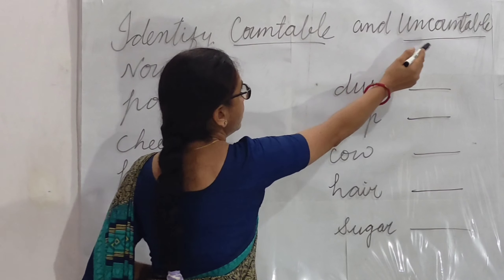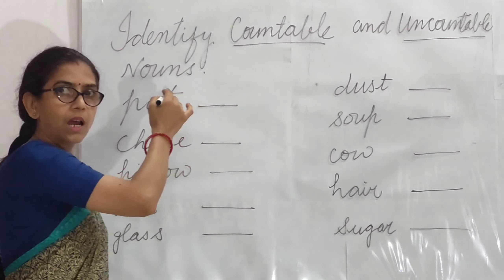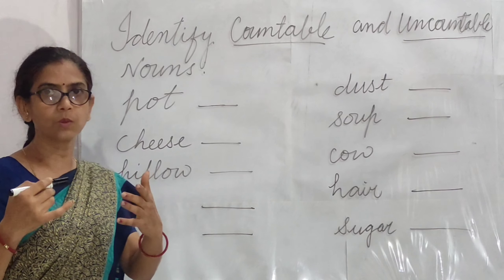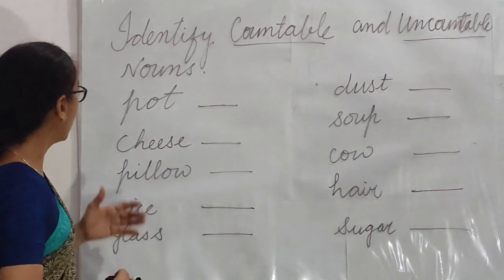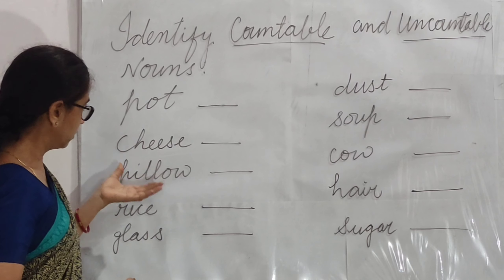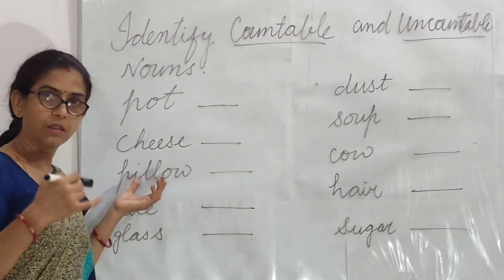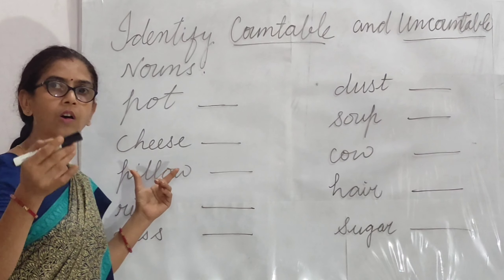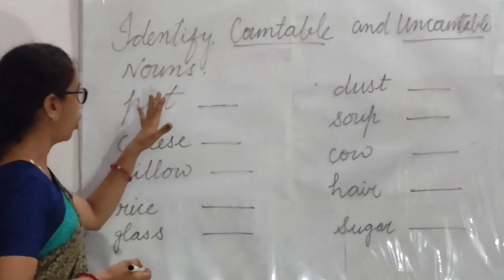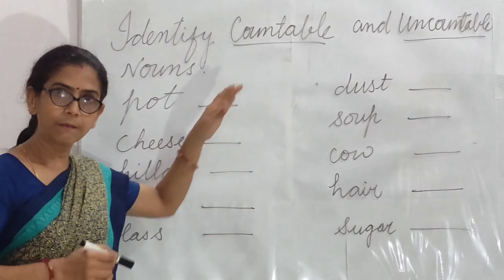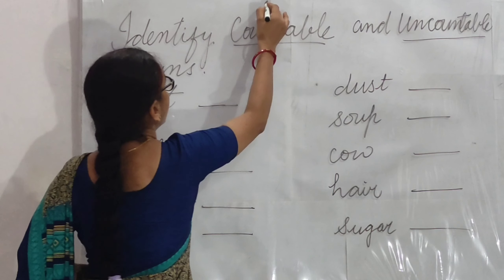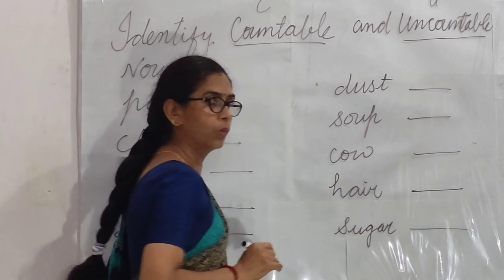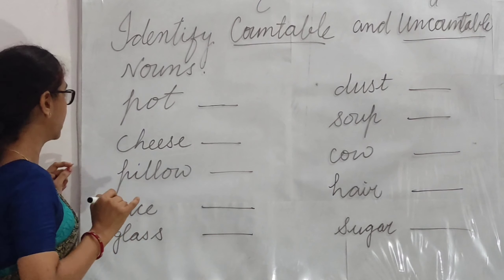Identify countable and uncountable nouns. Aapko yahan par countable aur uncountable nouns ko identify karna hai. I have written some nouns which you have to identify — whether the given noun is countable or uncountable. For countable nouns we will write C, and for uncountable we will write U.